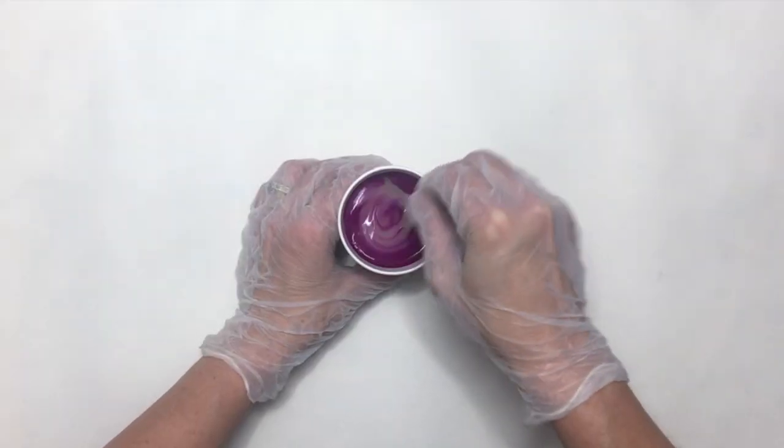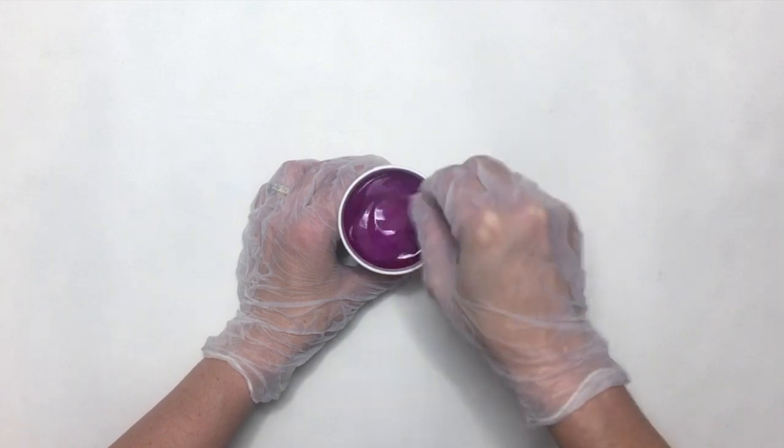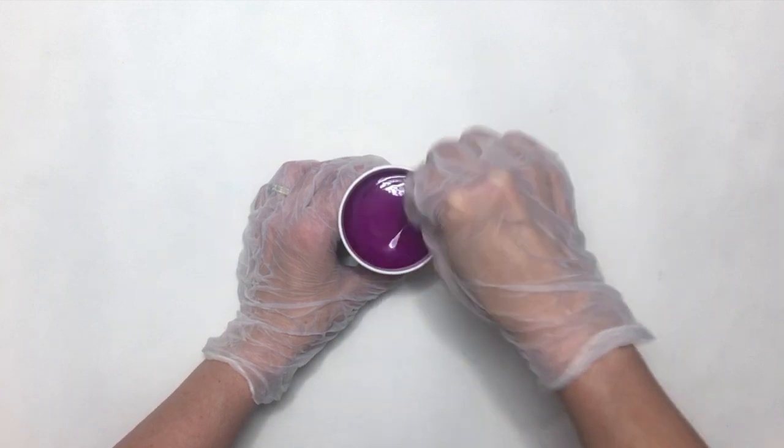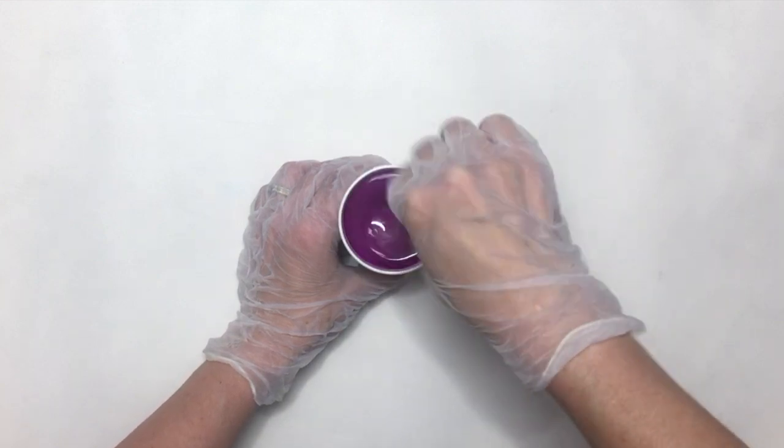Here I'm mixing each pigment into four ounces of soap batter, and then I'll put it into a different container for the one pot wonder swirl.